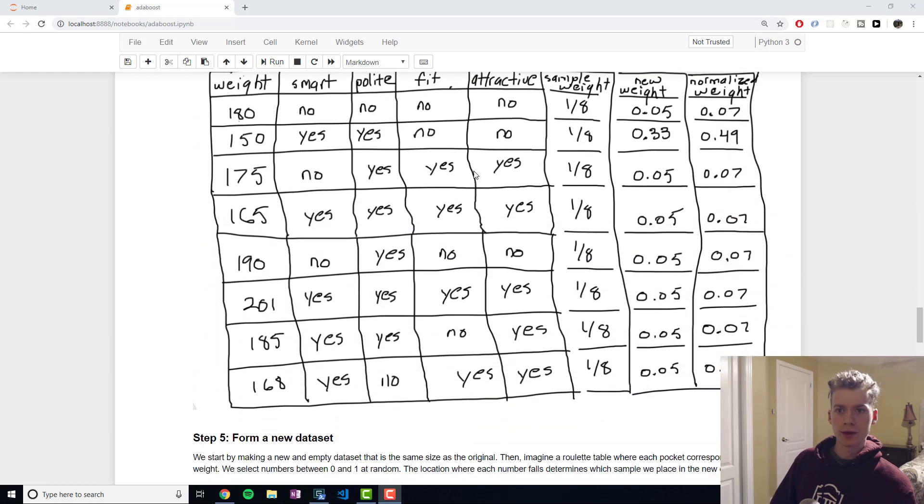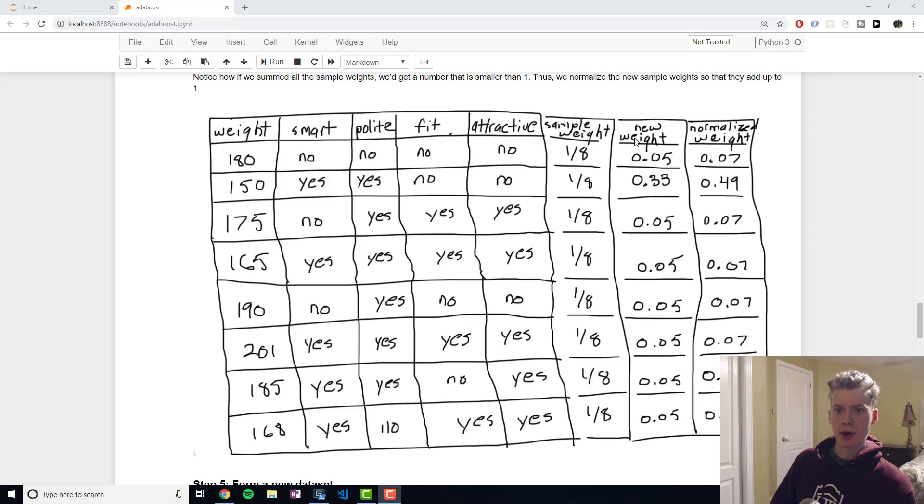If we draw that out, we end up getting a new column right here which is our new weights. If you end up adding these numbers up, you'll notice that you get a number smaller than one. For that reason we actually want to normalize the result such that when we add them all up it'll become one. That was the sample that it classified incorrectly, and it has a new sample weight of 0.49, and the rest have sample weights of 0.07.